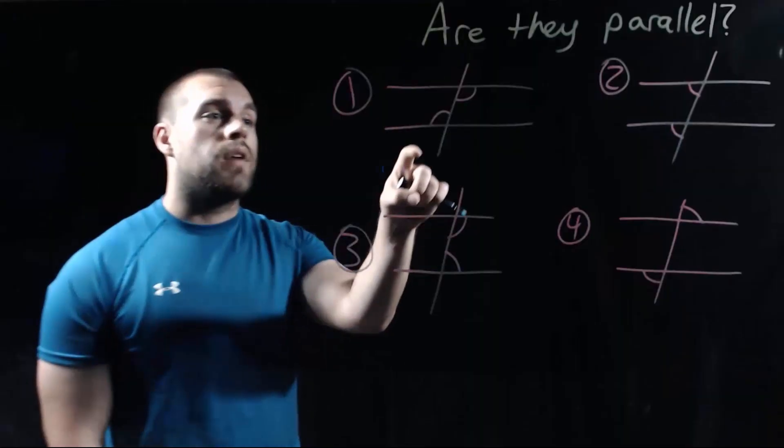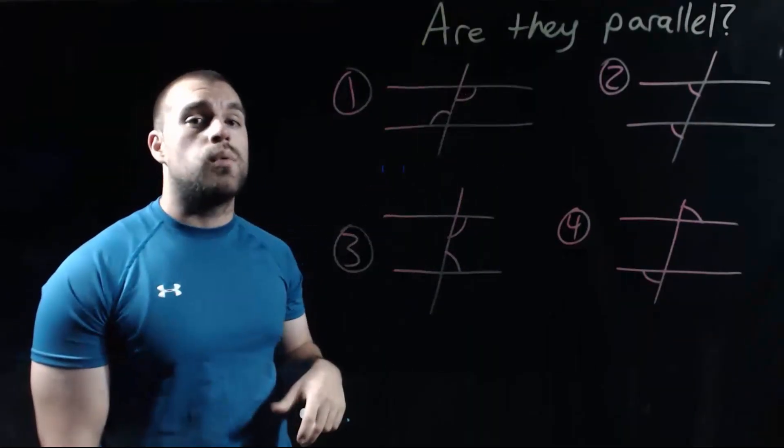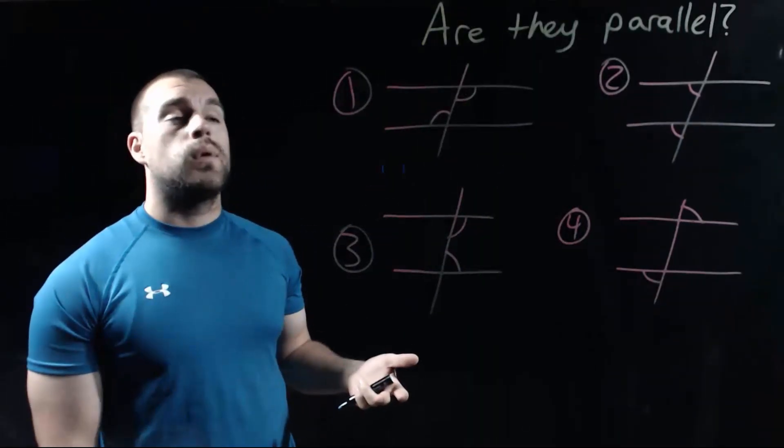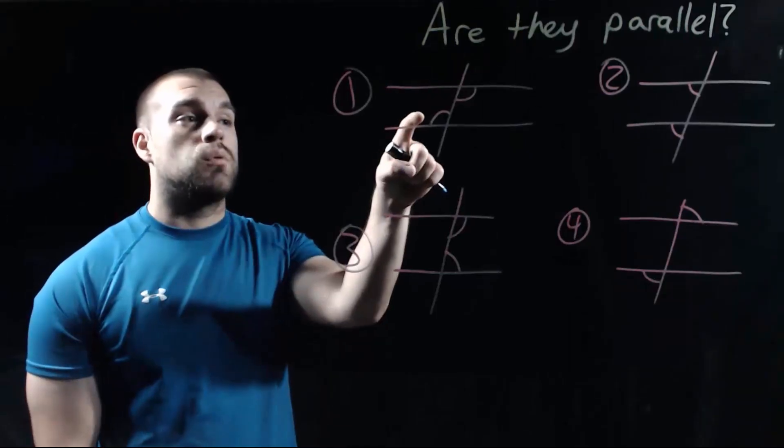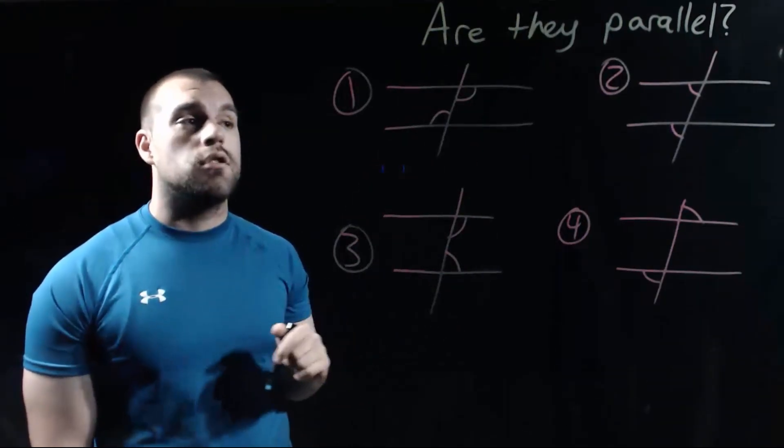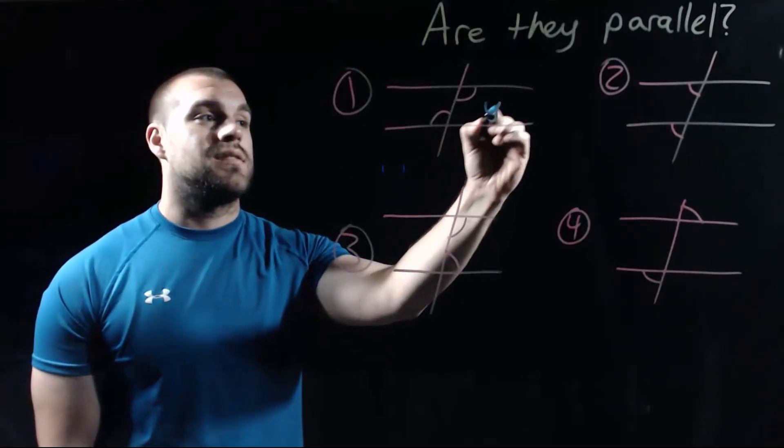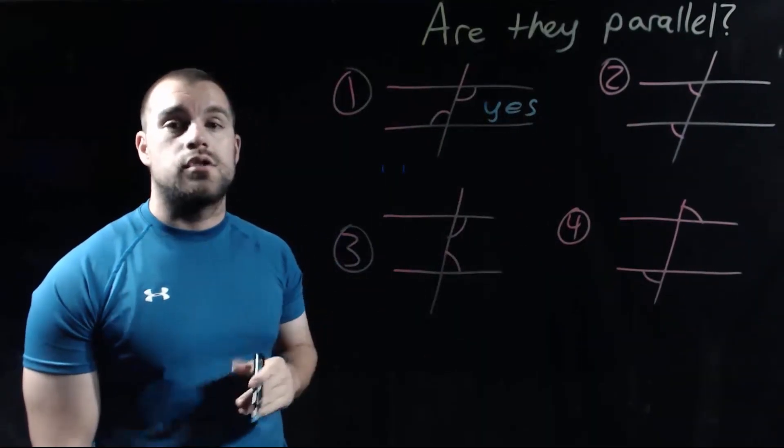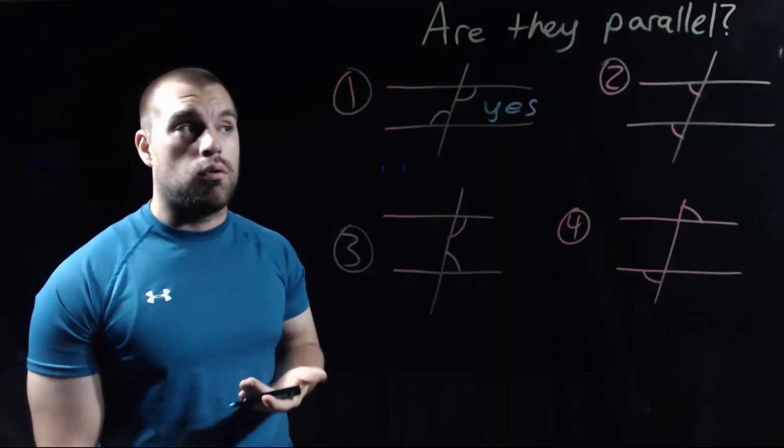If we take a look at number one, we've got a couple of arcs, which means that those two angles are congruent. If we were to classify these things, these would be alternate interior angles. So having alternate interior angles means, yes, these two lines are parallel because those two alternate interior angles are congruent.